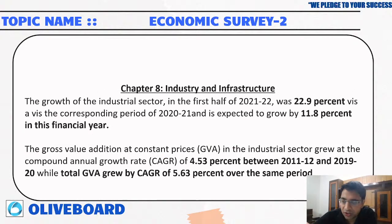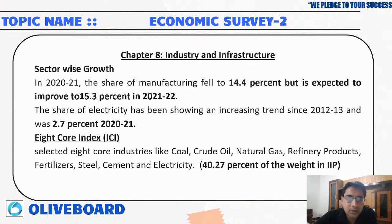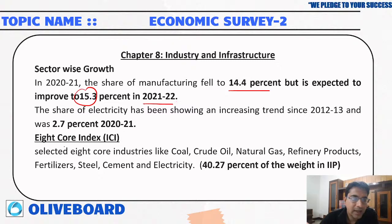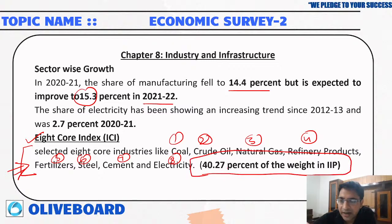Chapter 8 covers industry and infrastructure. During the first half of 2021-22, there was a 29.9 percent increase, with gross value addition growing by 4.53 percent. Manufacturing fell to 14.4 percent and is expected to improve to 15.3 percent in 2021-22. The eight core industries are coal, crude oil, natural gas, refinery products, fertilizer, steel, cement, and electricity. Together they constitute 40.27 percent of the industrial Index of Industrial Production, IIP.